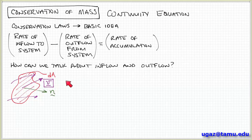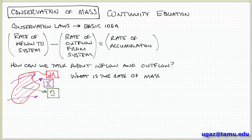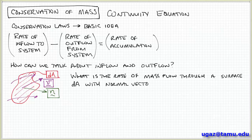This surface with area dA and normal n is in some flow field, shown with these purple lines. At the point associated with this differential area dA, the velocity can be expressed in terms of a velocity vector v, which can have some arbitrary orientation with respect to the surface. So dA, the normal vector n, and the velocity vector v are the three quantities to consider. The question then becomes: what is the rate of mass flow through this differential surface element dA?